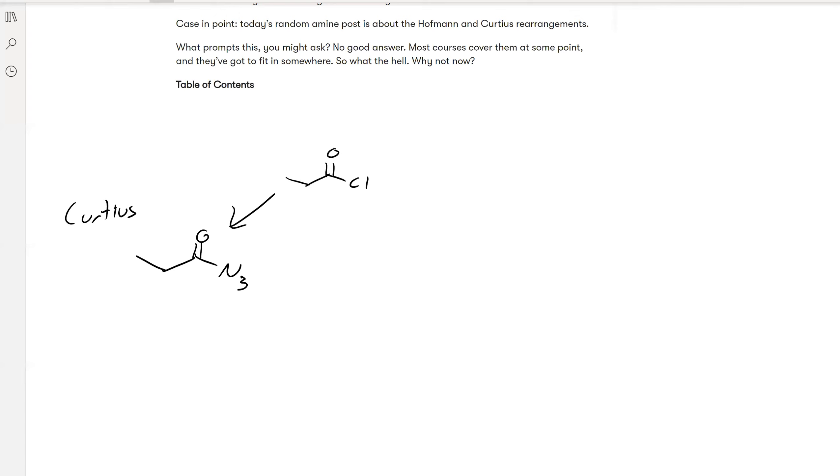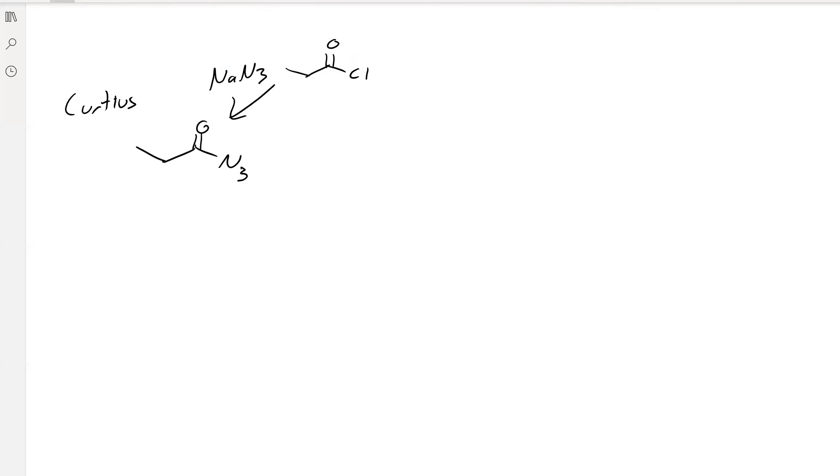The other way to do this is through the Hoffman rearrangement, and this one starts at an amide. You add some Br2 and some NaOH, and you'll form an isocyanate, which is this guy right here.